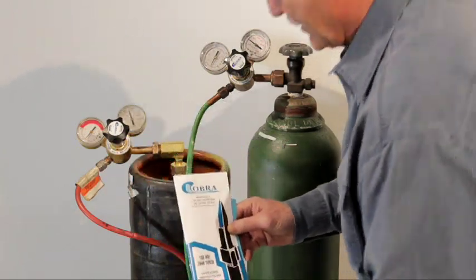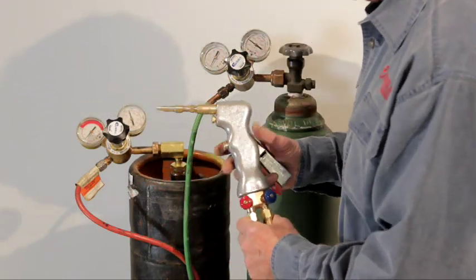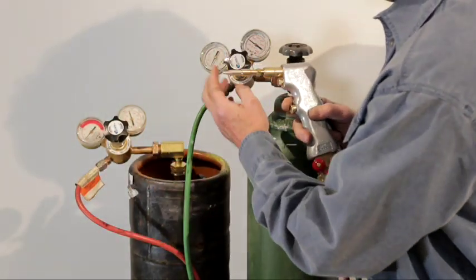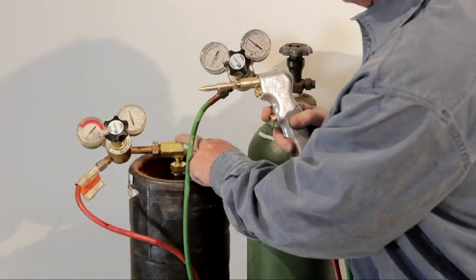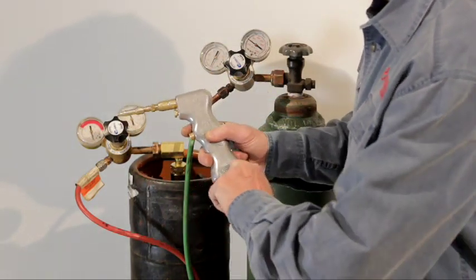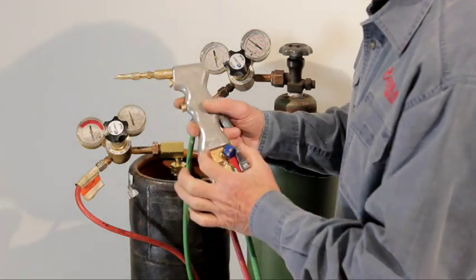Now we're going to go right into setting it up, that's very important with this torch. When you set it up, what you want to do is come to your regulators, back the pressure off so there's nothing coming to the gun. Then open the valves on your tank, open your valves two full turns right here.